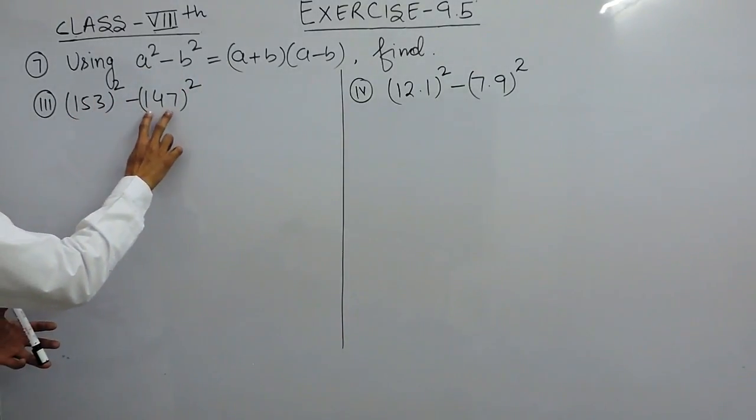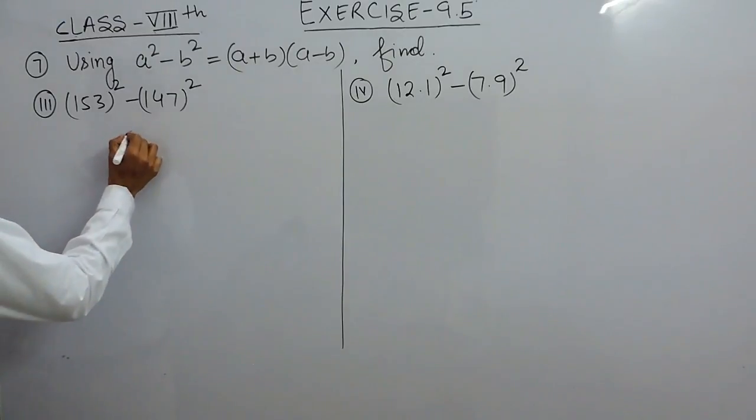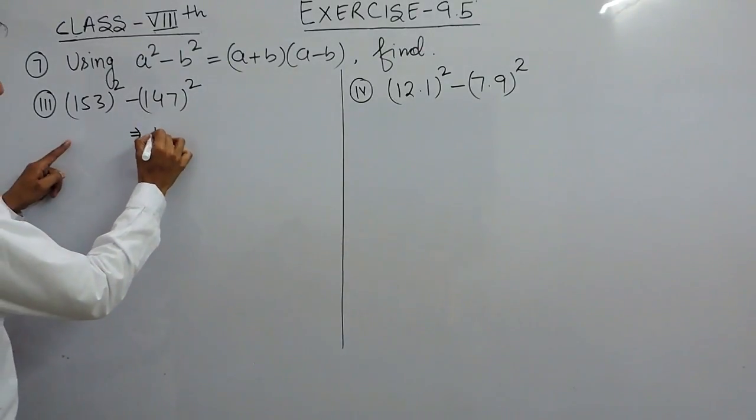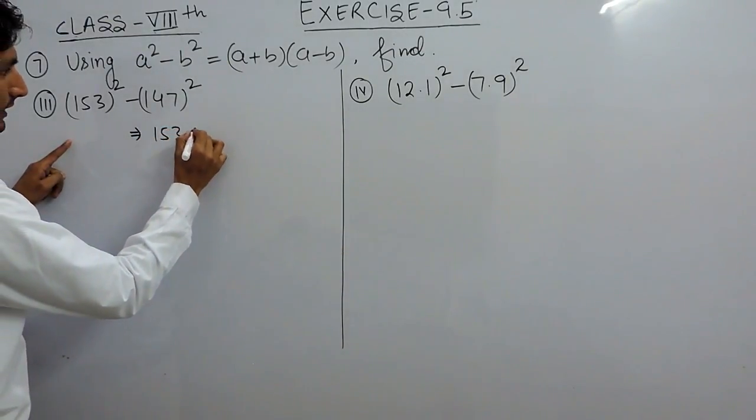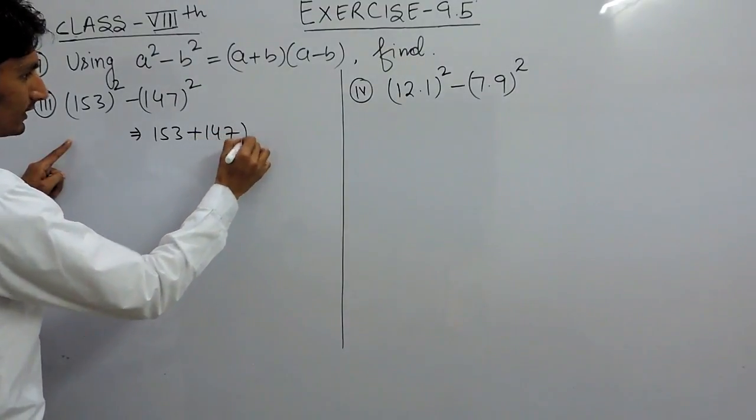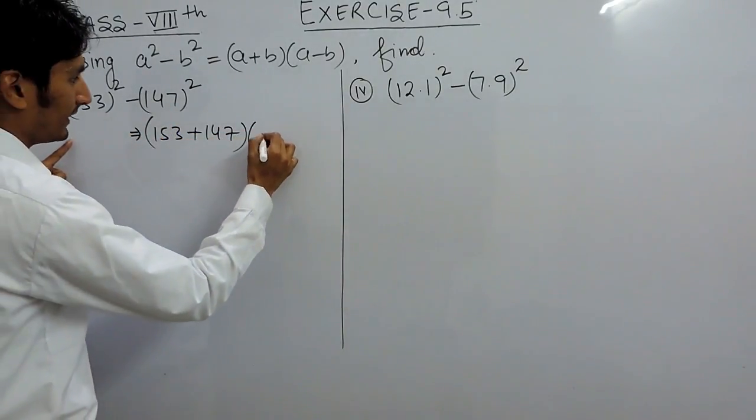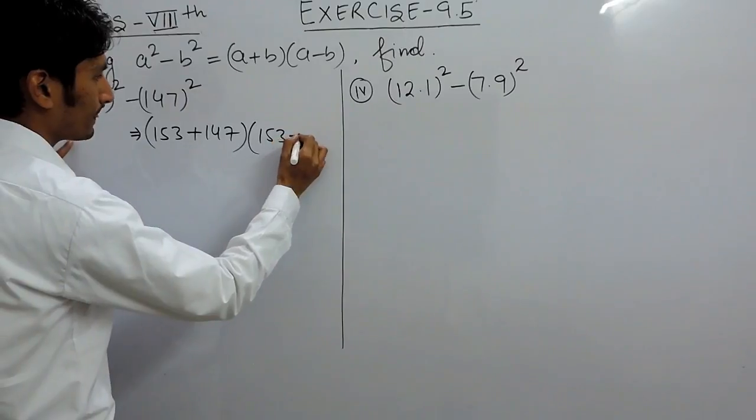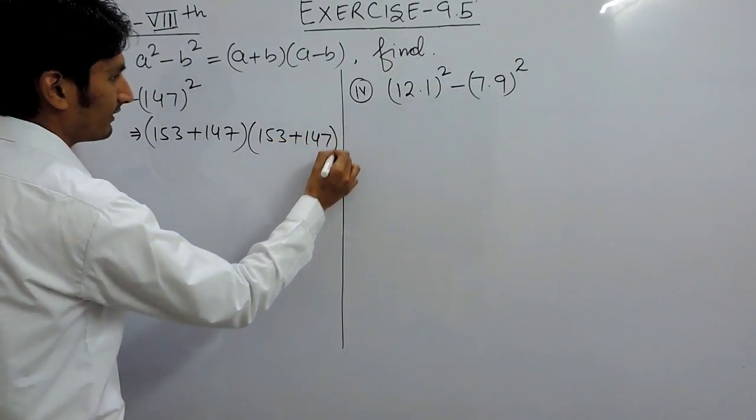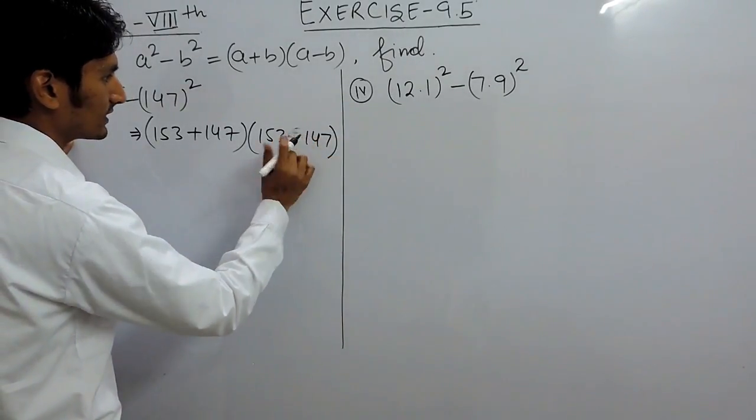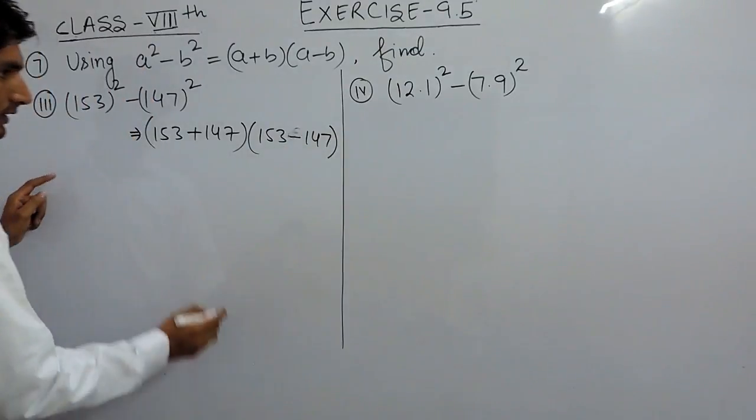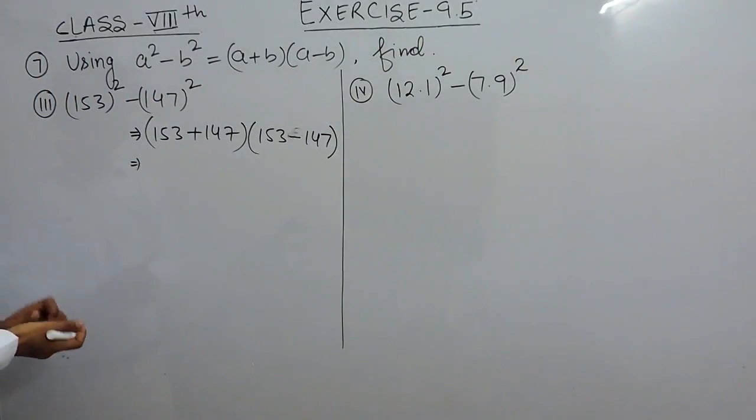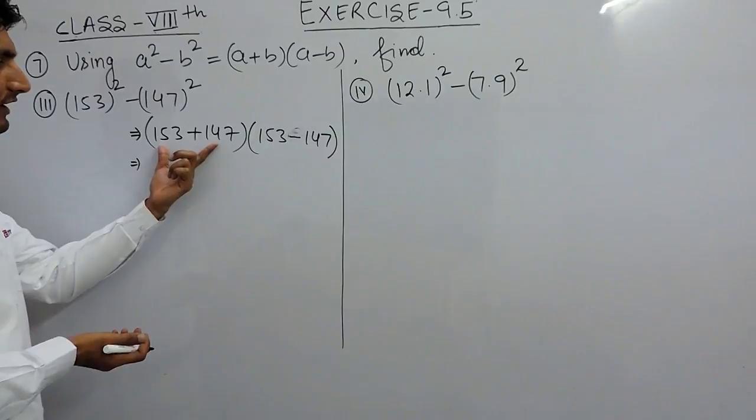So this is a² - b². Obviously this equals (a+b)(a-b). So this is 153 plus 147 into 153 minus 147. Now we have to solve this. First of all, we have to add this.